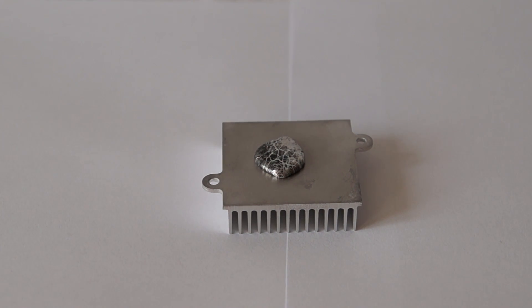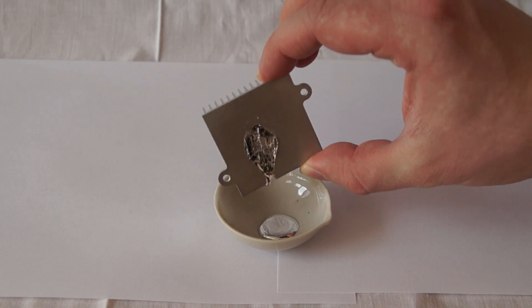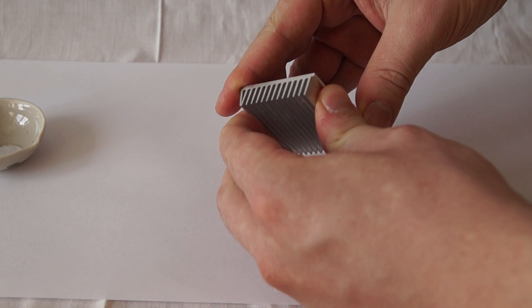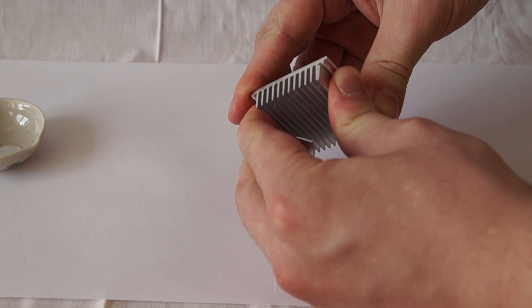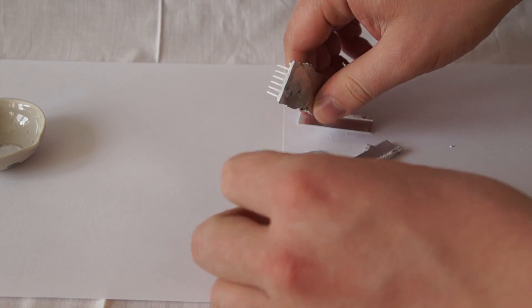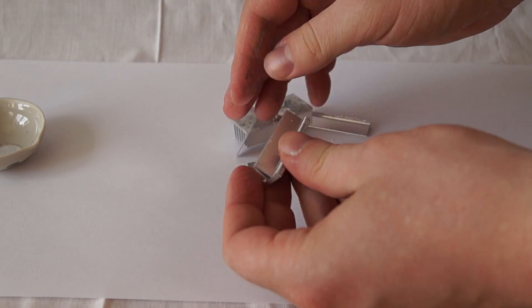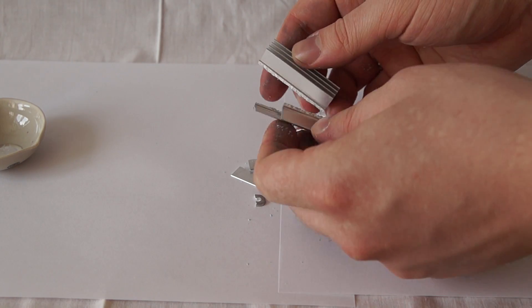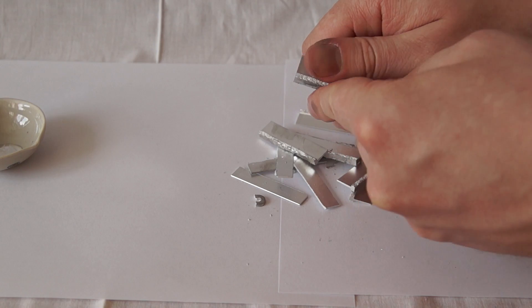After two days we need to wash the unreacted residues of gallium from the aluminum. Now let's check the fragility of the aluminum radiator. As you can see with a little effort aluminum easily starts to break in my hands. If I had left the radiator impregnated with gallium even longer, it would have become even more fragile.